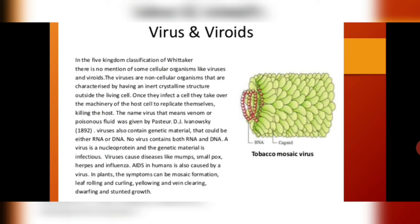In the five-kingdom classification of Robert Whittaker, there is no mention of non-cellular organisms like viruses and viroids. Viruses are non-cellular organisms characterized by having an inert crystalline structure outside the living cell. They take over the machinery of the host cell to replicate themselves, killing the host — they don't have their own machinery. The name 'virus' means venom or poisonous fluid, and it was given by D.J. Ivanovski in the year 1892. Viruses can have either RNA or DNA as their genetic material — no virus contains both. A virus basically has a nucleoprotein coat and genetic material.